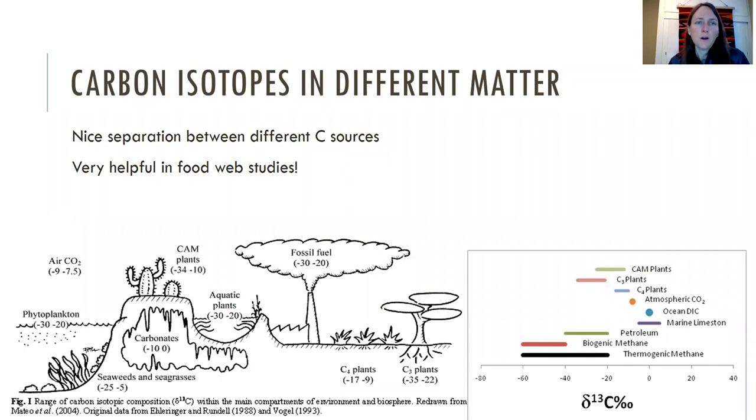So there are some carbon isotope differences for different types of things, so things like carbonates and fossil fuels, concentration in the atmosphere versus phytoplankton and seaweeds and seagrasses. So these can be really helpful in food web studies to try to understand the different types of carbon sources, because carbon is what a lot of organisms eat, and so it's great for food webs.